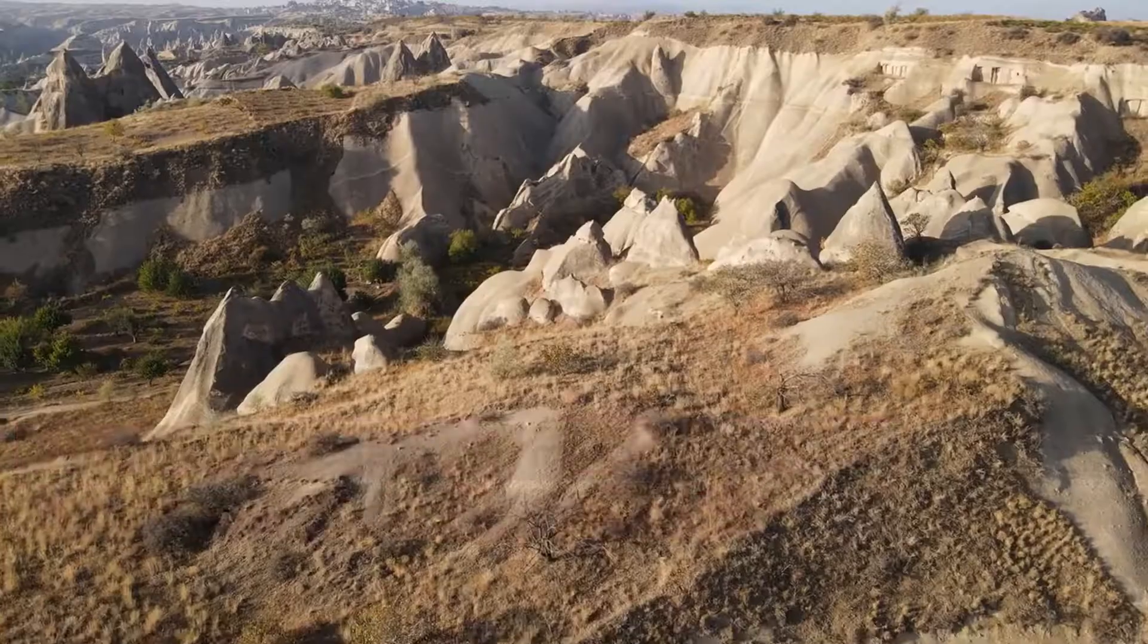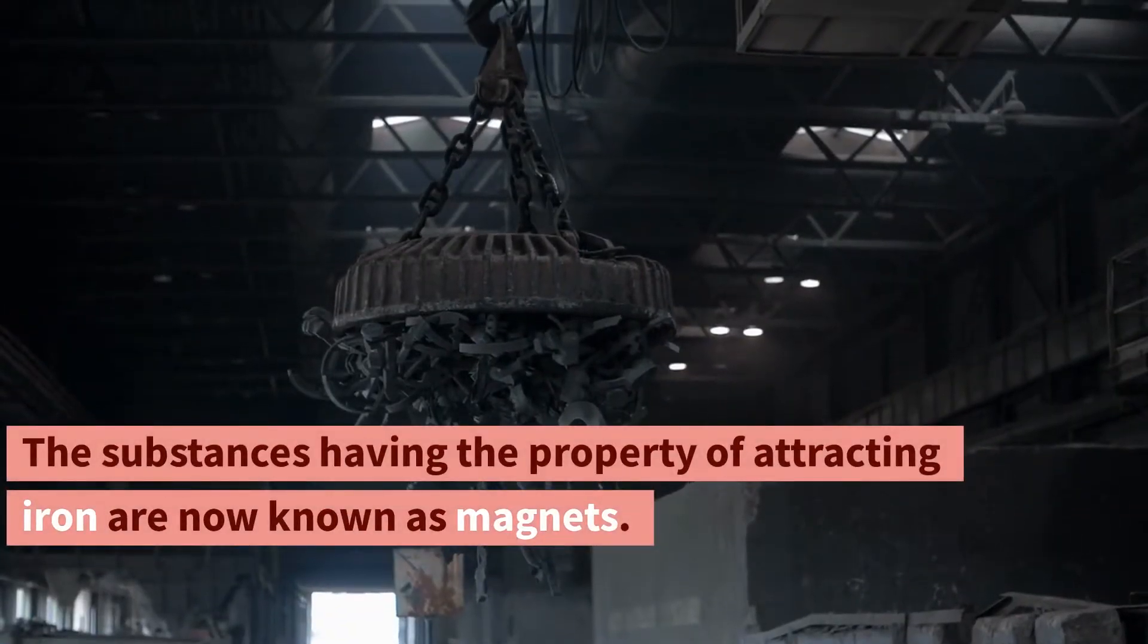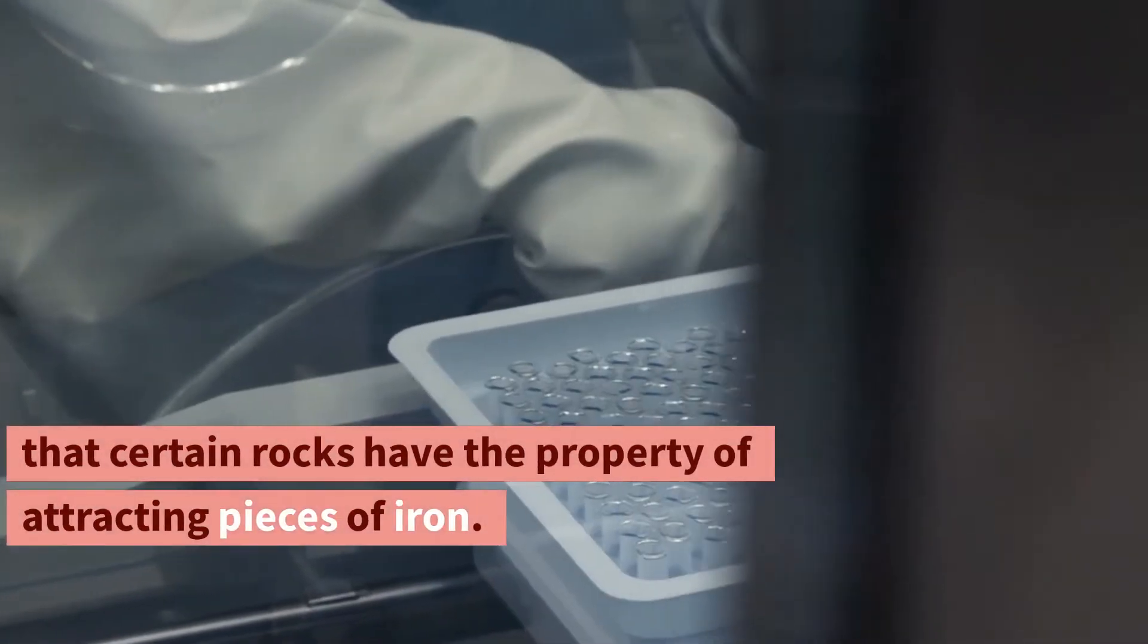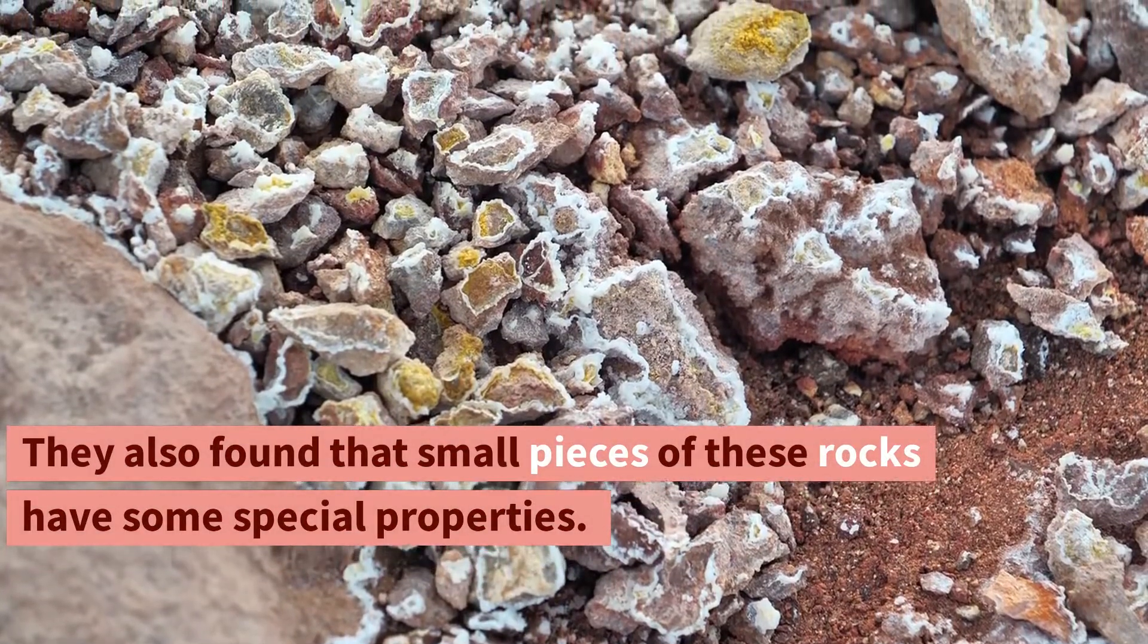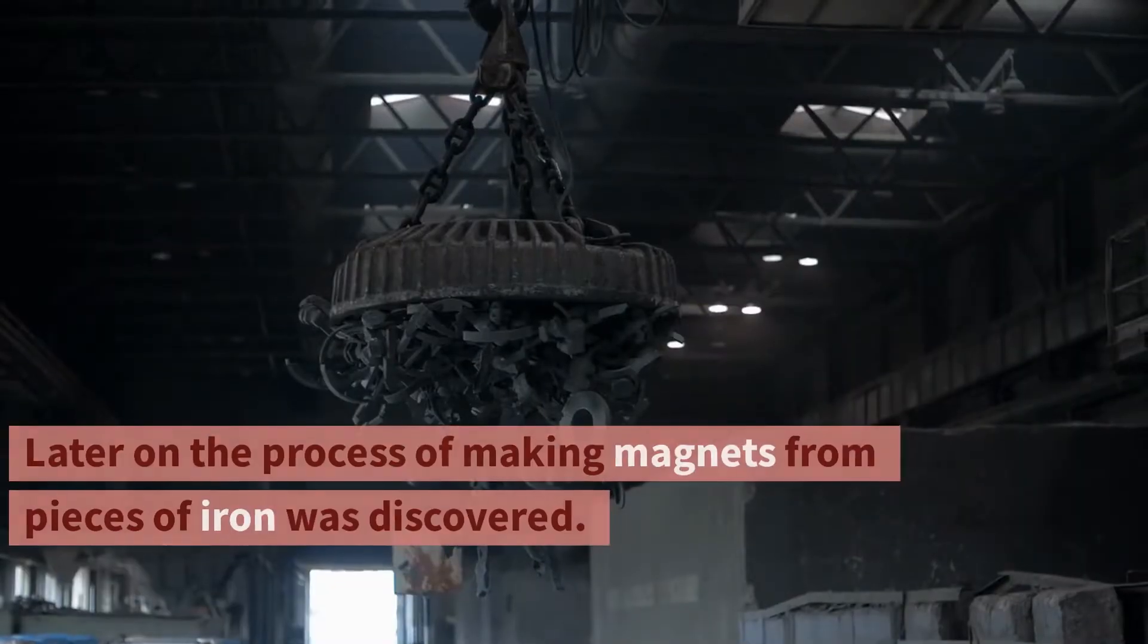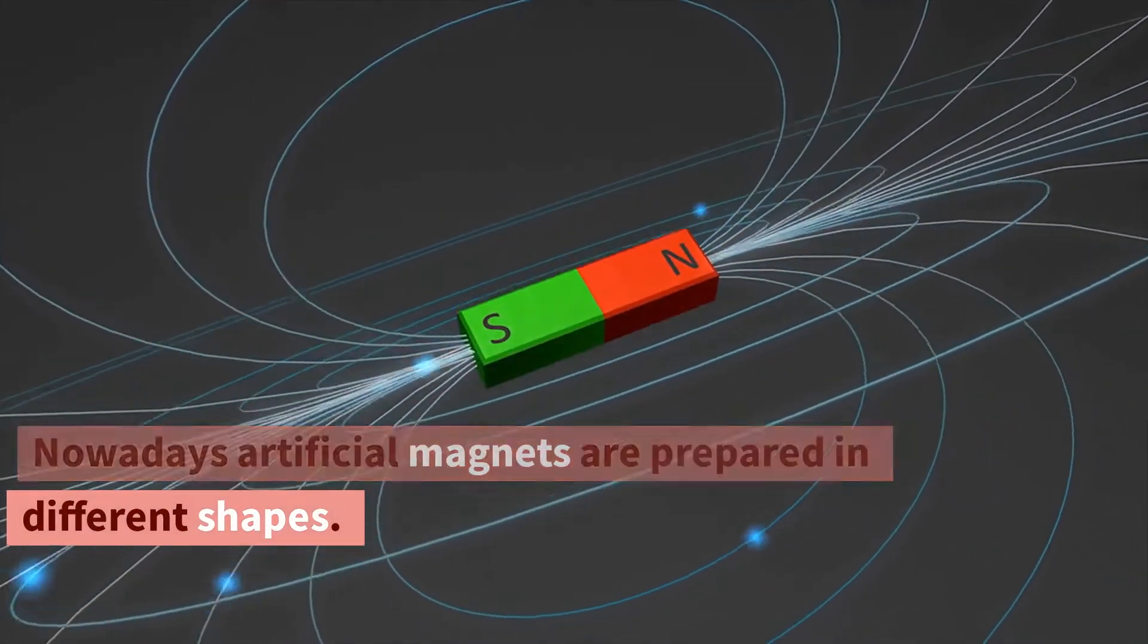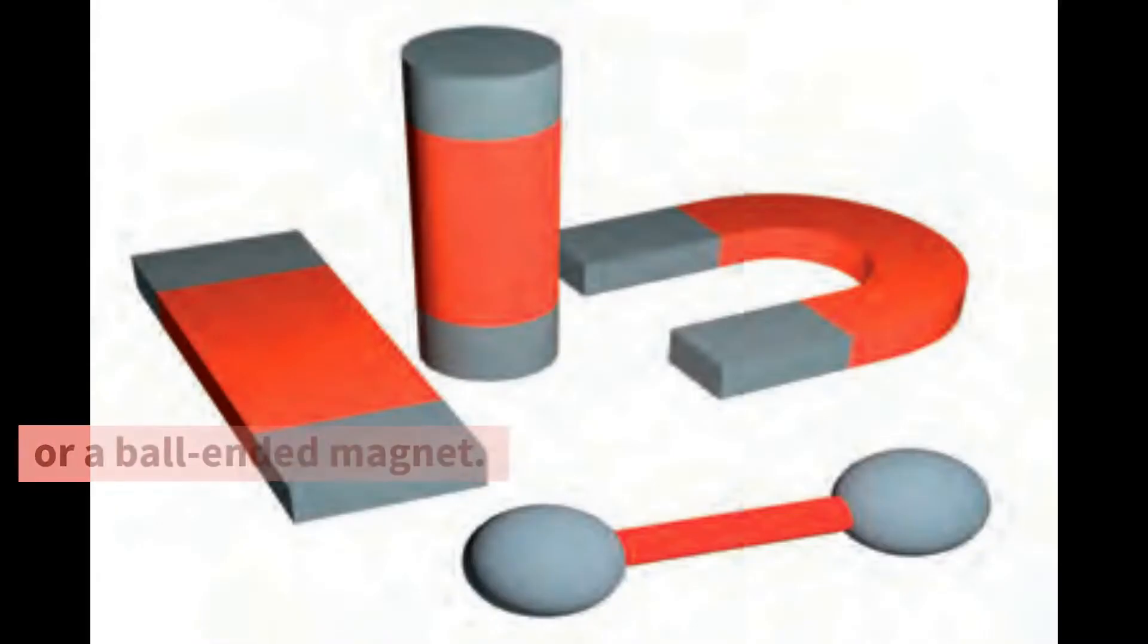Magnetite contains iron. Some people believe that magnetite was first discovered at a place called Magnesia. The substances having the property of attracting iron are now known as magnets. People discovered that certain rocks have the property of attracting pieces of iron. They also found that small pieces of these rocks have some special properties. They named these naturally occurring materials magnets. Later on the process of making magnets from pieces of iron was discovered. These are known as artificial magnets. Nowadays artificial magnets are prepared in different shapes, for example, bar magnet, horseshoe magnet, cylindrical magnet or a ball-ended magnet.